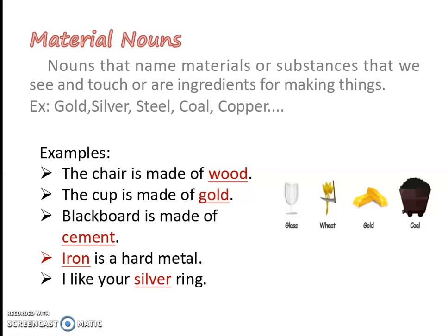Next, we will see about material nouns. What do you mean by material nouns? This noun is saying about metals or any materials. For example, gold, silver, steel, coal, copper. Nouns that name materials or substances that we see and touch are ingredients for making things. Some things like rings, chains, doors, or a house are made with some materials — that is called material nouns. Examples include wood, gold, cement, iron, silver.